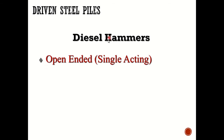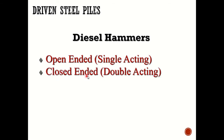Diesel hammers are the most common and reliable, and work really well in winter. Open-ended single acting: by gravity it falls down, once it explodes it exhausts and shoots it back up, then falls back down. We need enough resistance for this to work. Double acting: it's enclosed — the explosion happens, hits the top and shoots the hammer back down. The most common diesel hammers are open-ended diesel hammers.